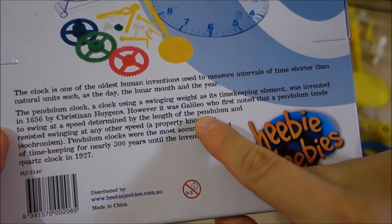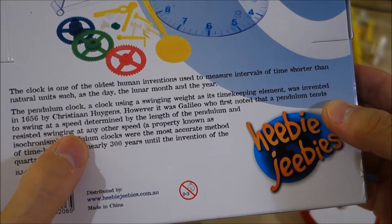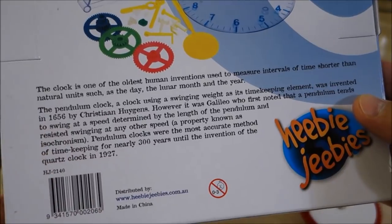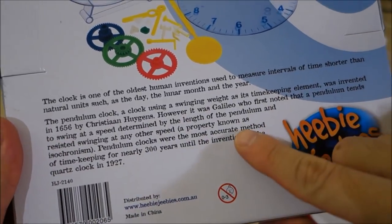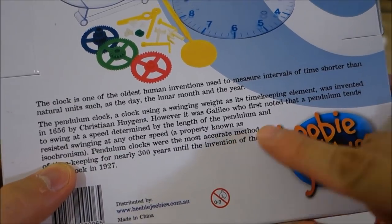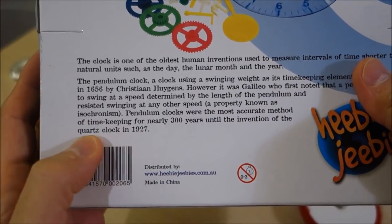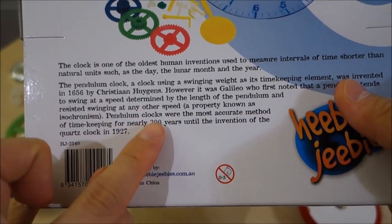The pendulum clock, basically a swinging weight using the timekeeping element, was invented in 1656 by Huygens. It was Galileo who noted that pendulums tend to swing at a speed determined by the length of the pendulum and resist swinging at any other speed, which is what we call isochronism, another horology term there.